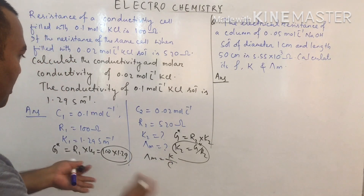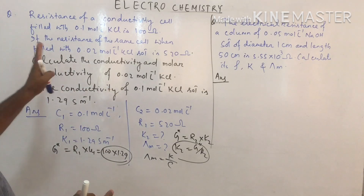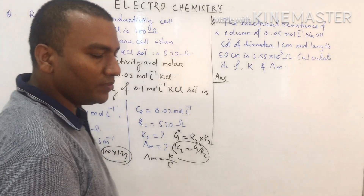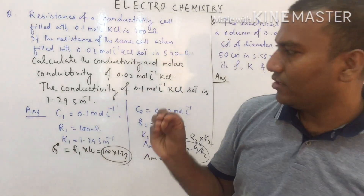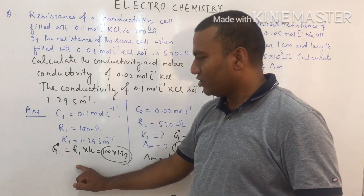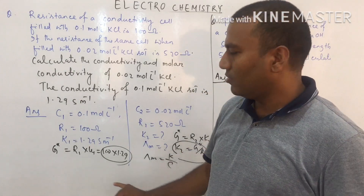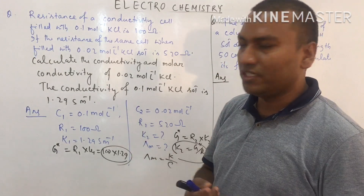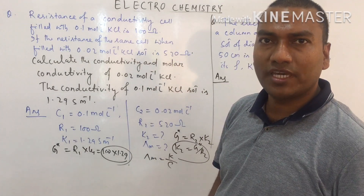In electrochemistry, when questions come in this format, always check which data are given — concentration, resistance, conductance, or conductivity. Then calculate G* (cell constant). G* remains the same for both concentrations; only resistance and conductivity change.